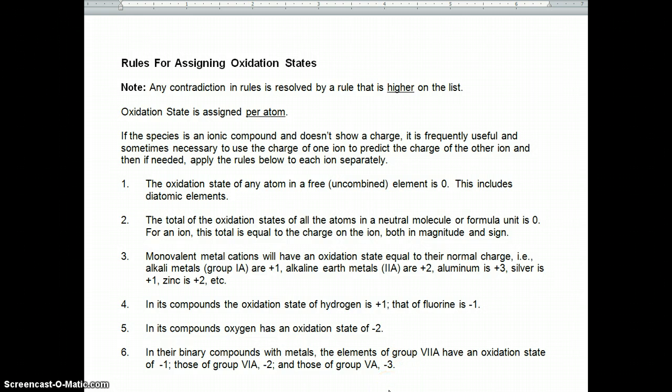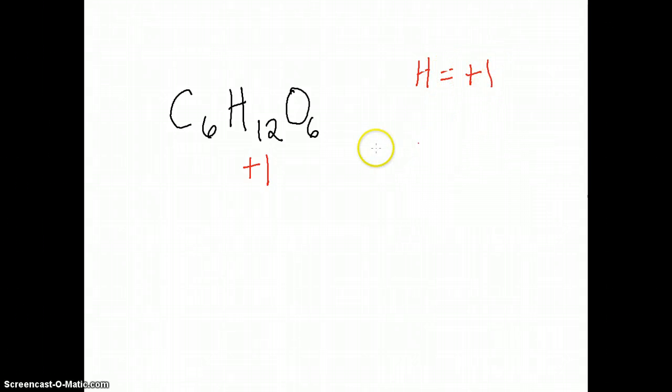The first example is glucose, which is C6H12O6. If we follow our rules, the first one we assign is hydrogen, which is plus 1. So that's 12 hydrogen, which would give us 12 for hydrogen.